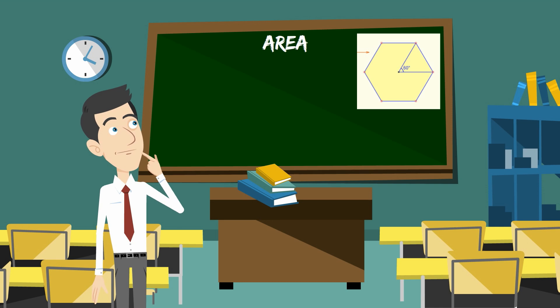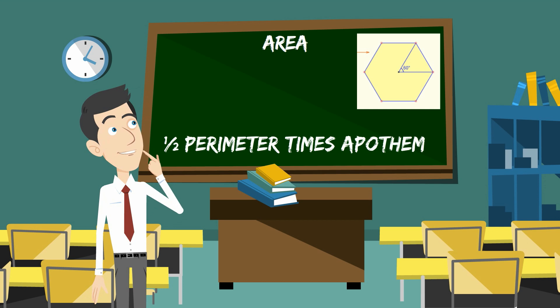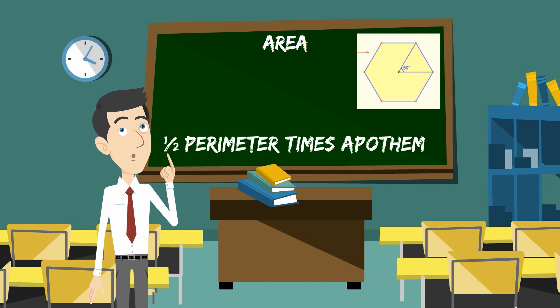You can find the area if the apothem is known by taking 1 half the perimeter times the apothem.